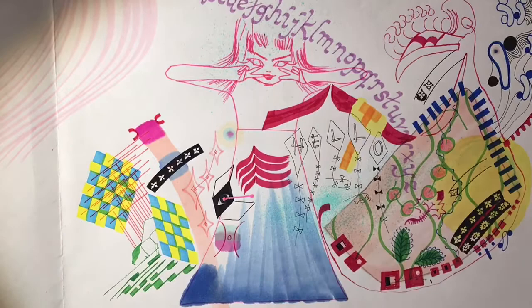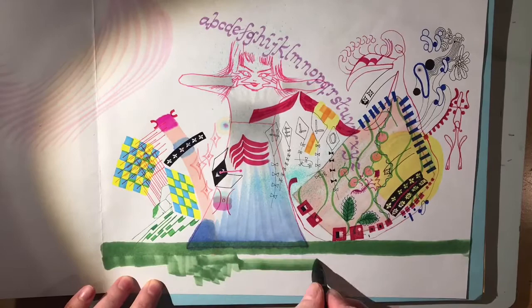The similarity of an auroral display to curtains is often enhanced by the folds within arcs. Arcs can fragment or break up into separate, at times rapidly changing, often wave-like features that may fill the whole sky.